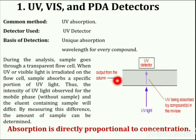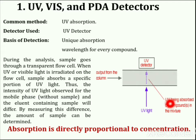The most common detection method includes the ultraviolet absorption method. During the analysis, the sample goes through a transparent flow cell. When ultraviolet or visible light is irradiated on the flow cell, the sample absorbs a specific portion of that light. Thus, the intensity of UV or visible light observed for the mobile phase without sample and the eluent containing the sample will differ. By measuring this difference, the amount of sample can be determined.